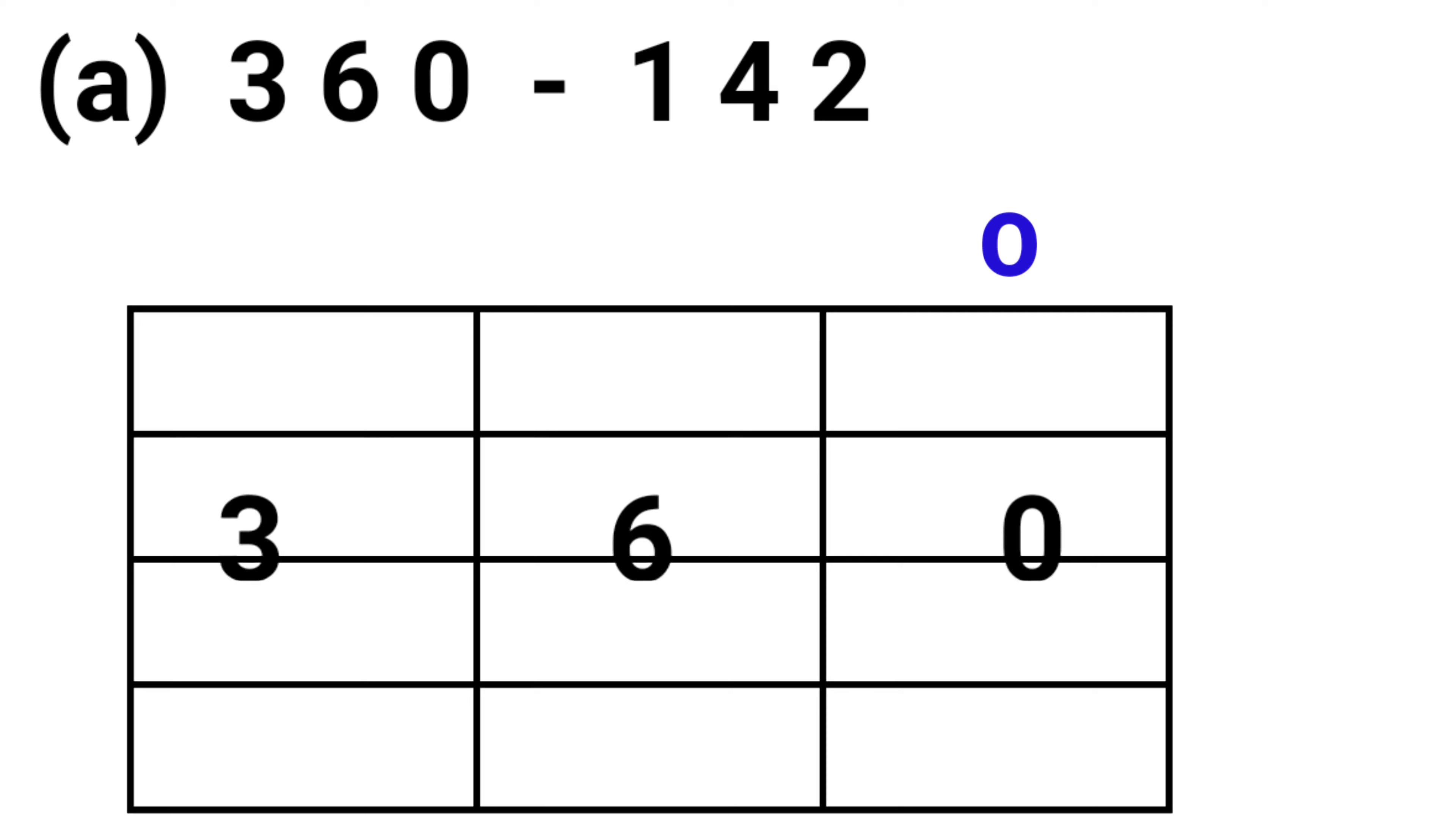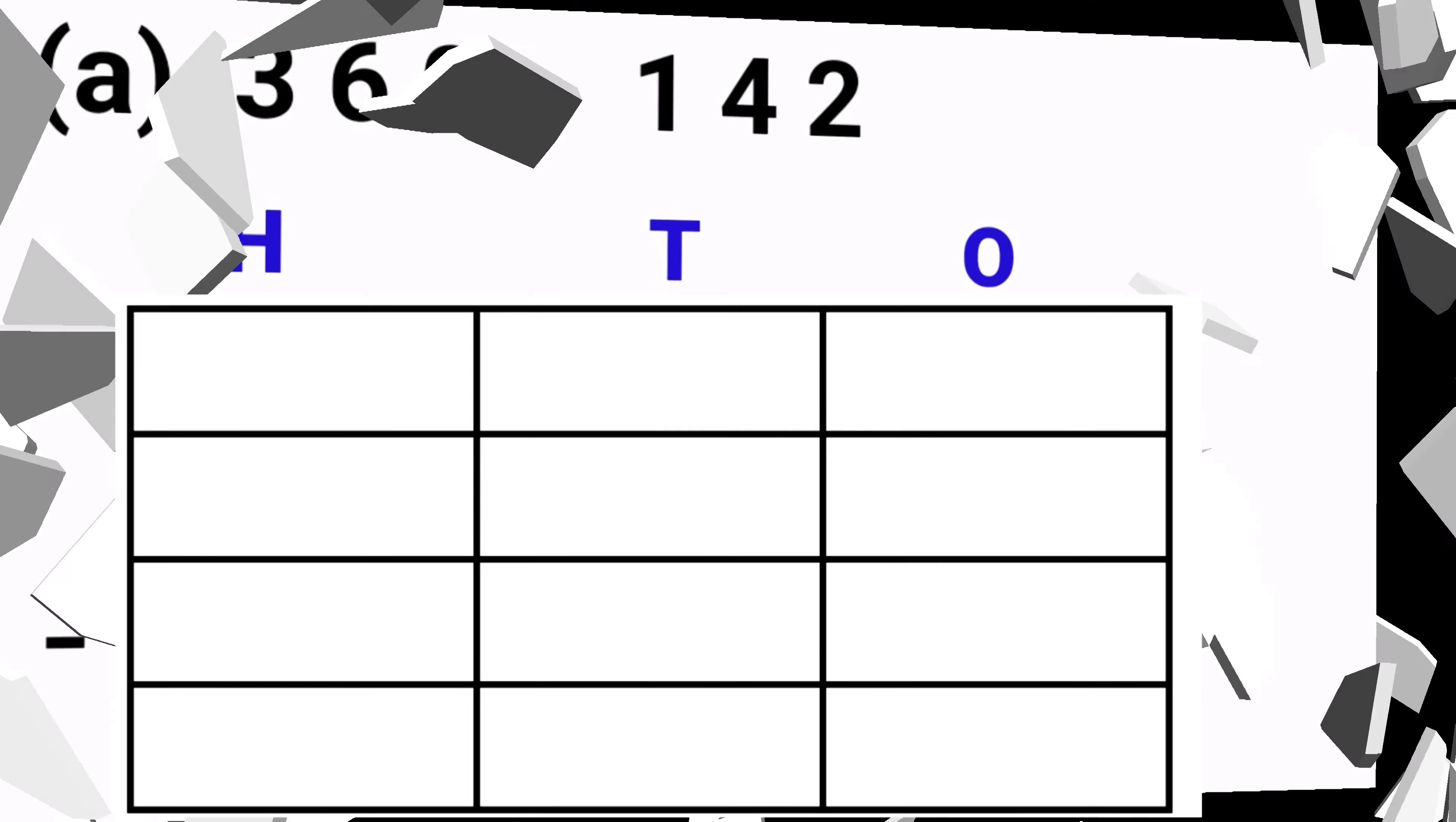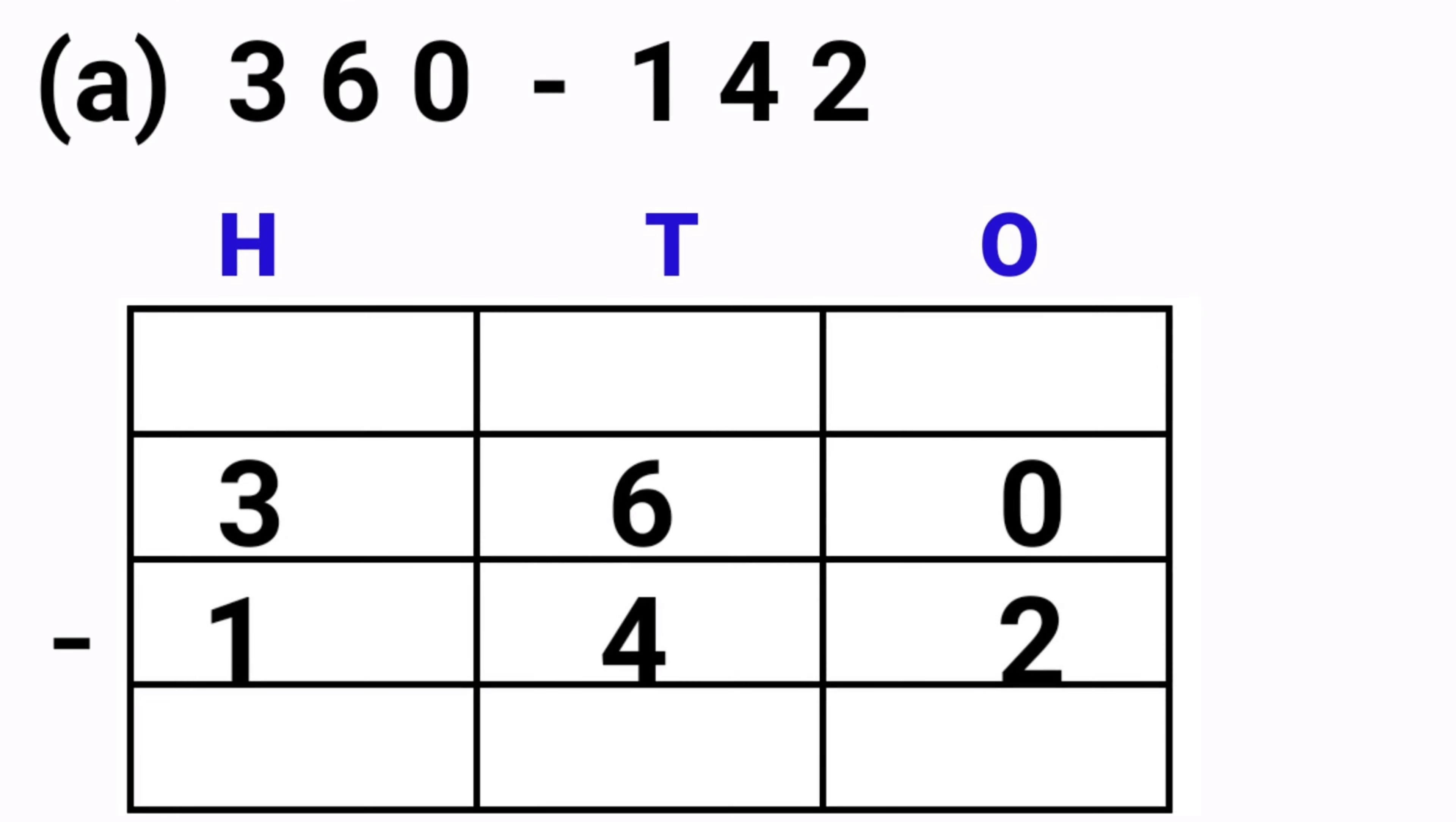In part a, 360 minus 142. First we have to subtract from ones place: 0 minus 2. We cannot subtract 2 from 0, so we will borrow 1 from the tens place. 6 becomes 5, and 0 will become 10. Now we can subtract 10 minus 2.